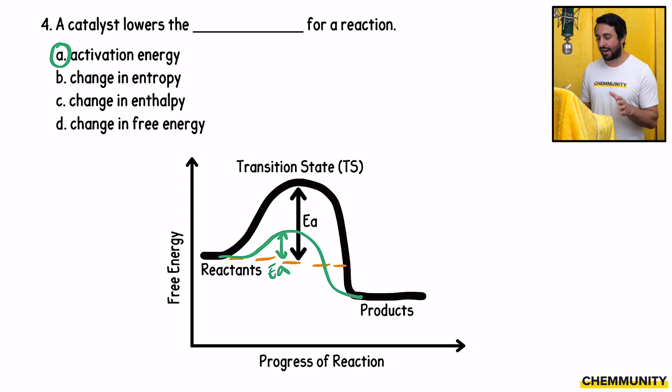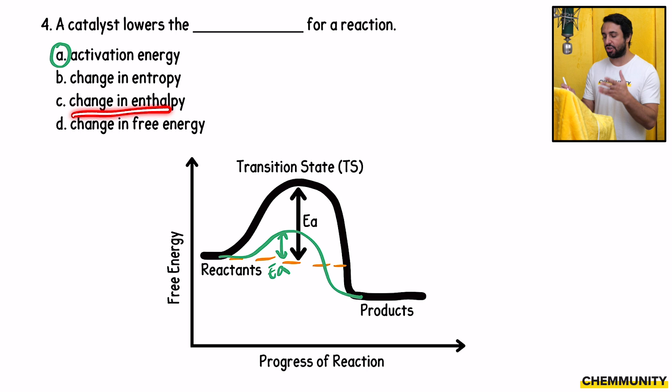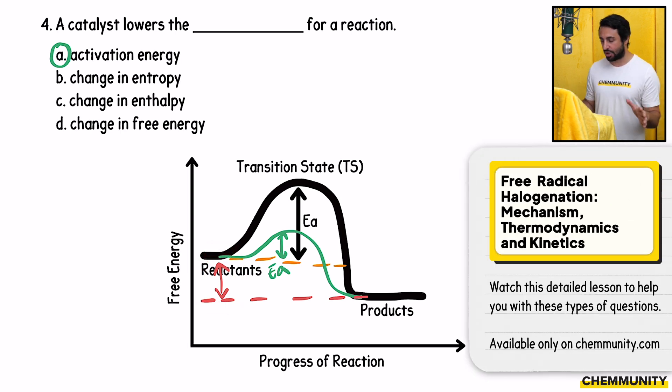What we need to understand about the catalyst is that it does not alter any of these other parameters. It does not change the position of reactants or products on the energy diagram. For example, change in enthalpy or change in free energy, that is determined from where the reactants sit to where the products sit. So if those don't change their location, none of those values can change either.